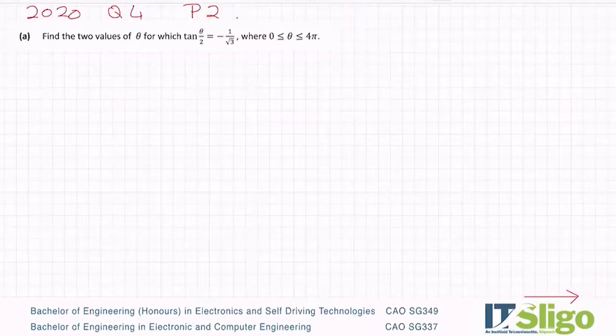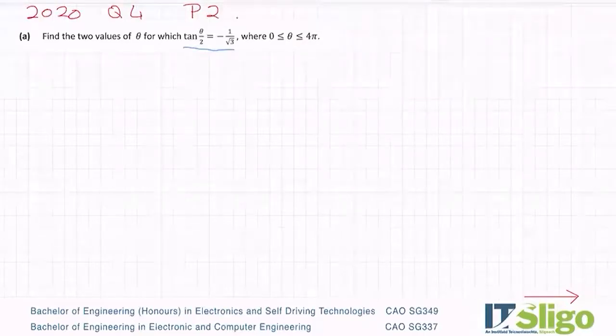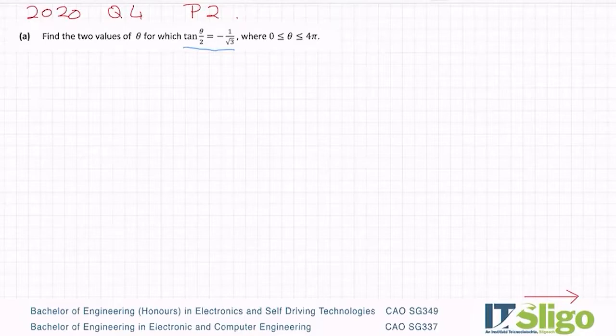It's a little bit unusual, this one, in that we have a fraction here and it goes to 4π. But steps are still the same. I'm going to use this to find my reference angle and then use CAST to figure out which quadrants give an angle of minus 1 over root 3.